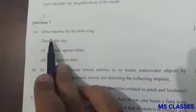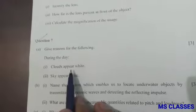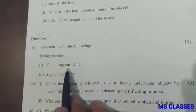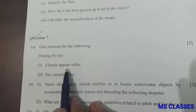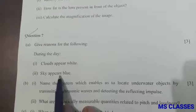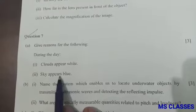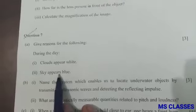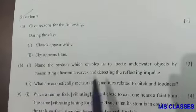Question 7(a): Give reason for the following: During the day, clouds appear white because light from the sun is white. As light passes through a cloud, it interacts with the water droplets which are much bigger than the atmospheric particles that exist in sky. Second, sky appears blue. Blue light is scattered in all directions by the tiny molecules of air in Earth's atmosphere because it travels as shorter, smaller waves.